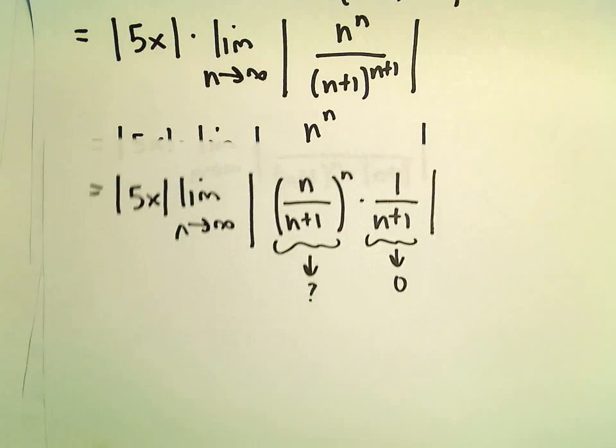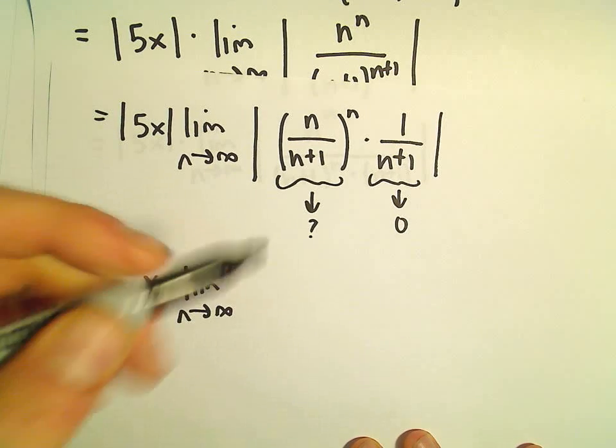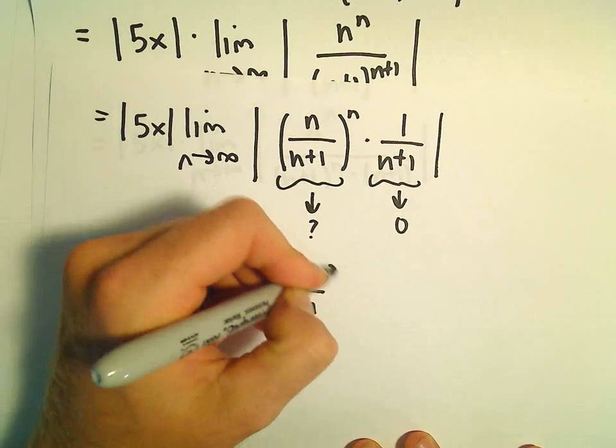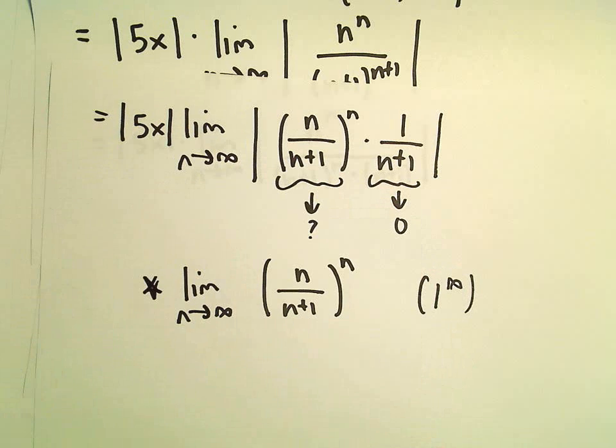So let's see if we can't figure out what's going on with that limit. So we have the limit as n goes to infinity of n over n plus 1 raised to the n. So again, this is an indeterminate form. I think there's probably a little bit of algebra that we can do here as well.